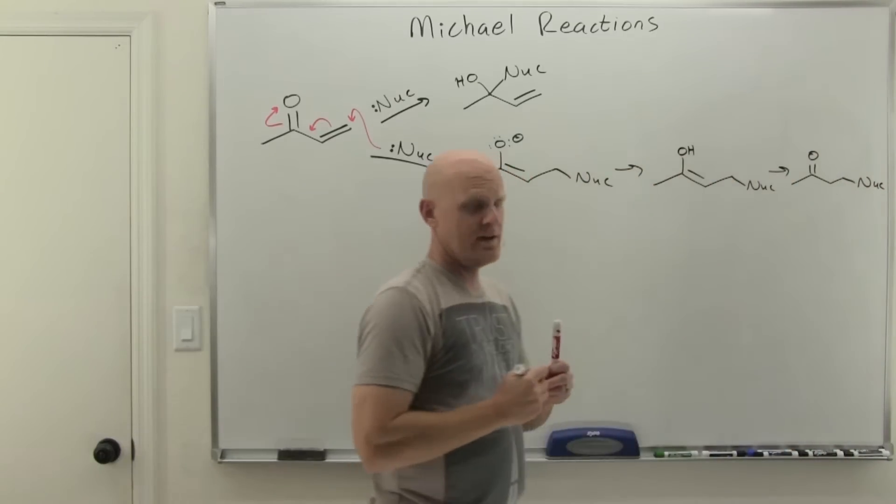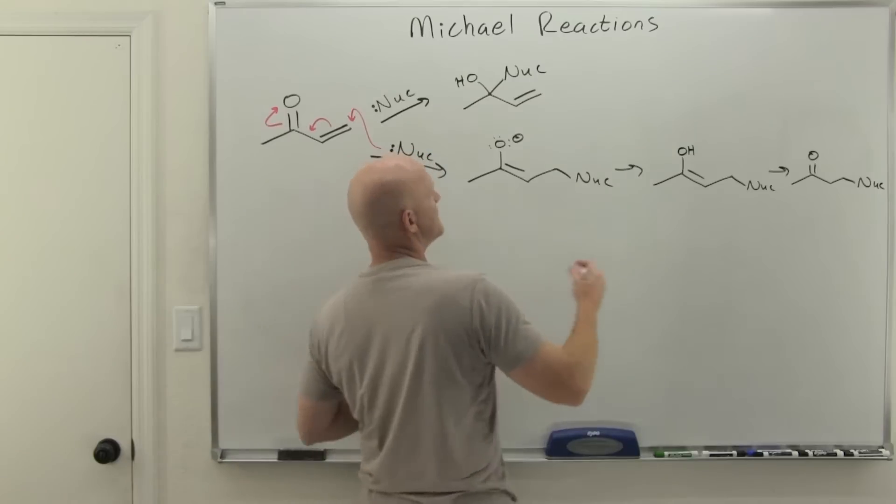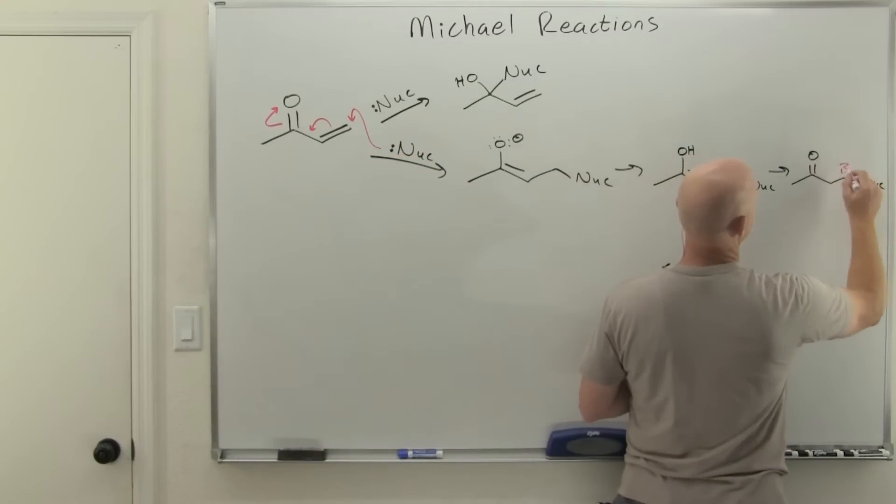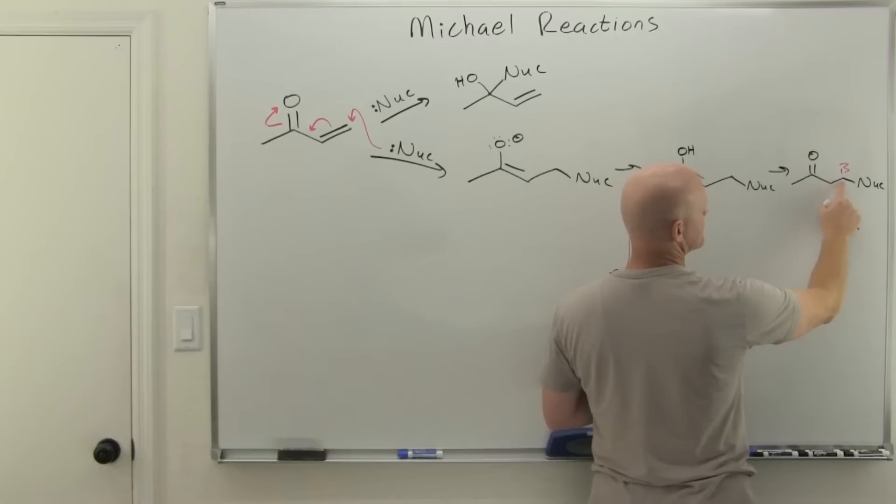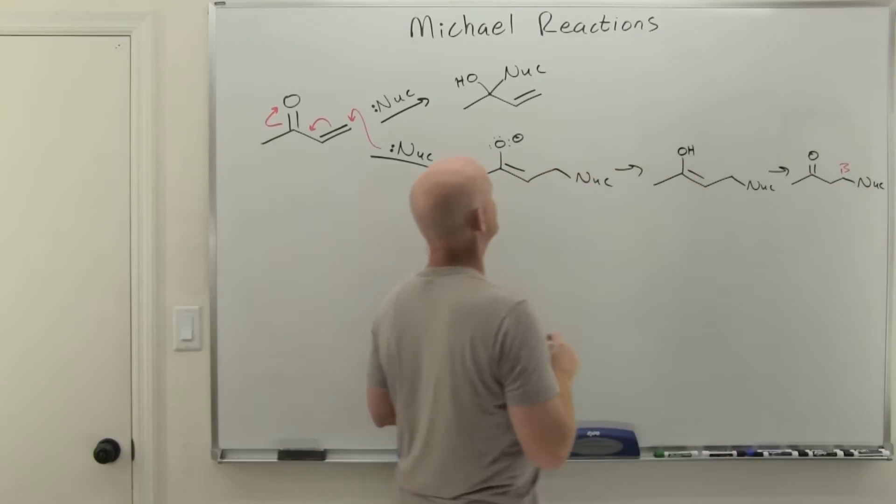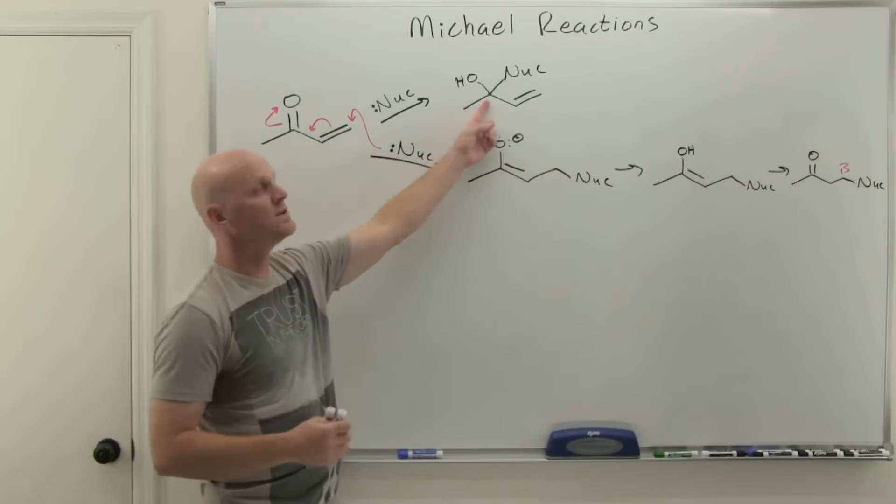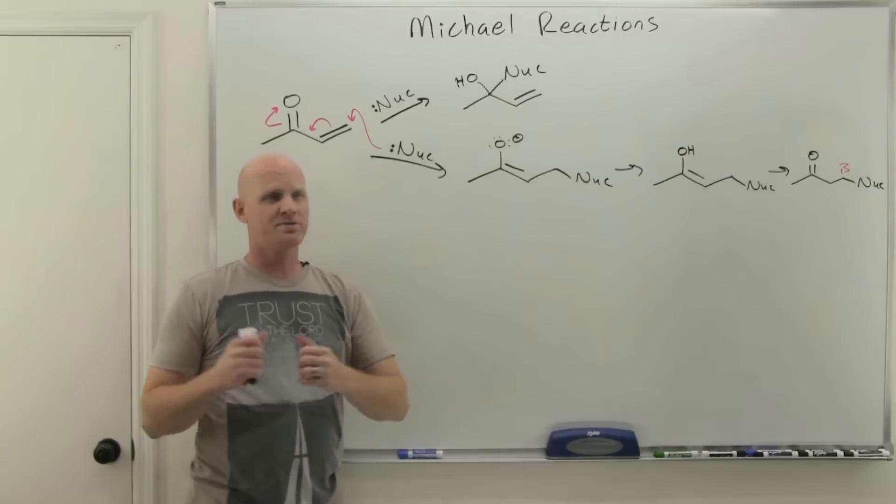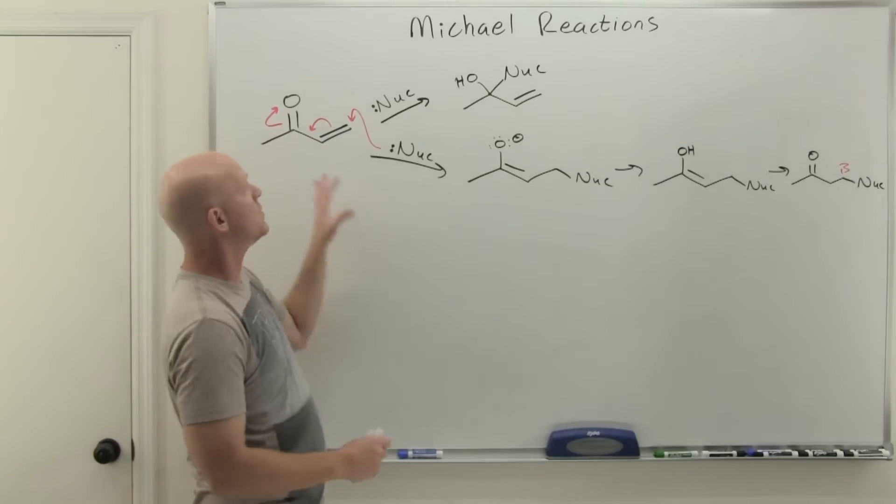That enolate is going to get protonated to an enol, and that enol is going to tautomerize back to a ketone. So in this case, ultimately we've attached a nucleophile at the beta carbon. Notice there's the carbonyl, there's alpha, there's beta—that's where the nucleophile attached.